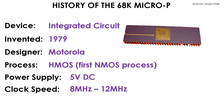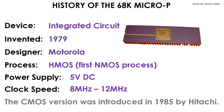In 1985, a Japanese electronics device manufacturing company, Hitachi, introduced the first CMOS version of the 68K microprocessor. CMOS technology allows the fabrication of N-channel as well as P-channel transistors on a common silicon substrate. This enabled the 68K microprocessor to have extremely low power consumption when compared to its older HMOS version.